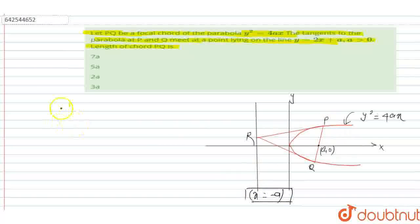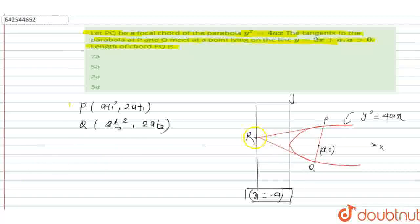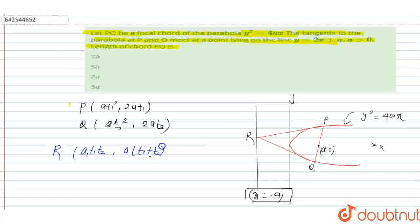Let's assume the coordinate of point P in parametric form is (at1², 2at1), and the coordinate of Q is (at2², 2at2). Since the tangent on point P and point Q meet at intersection point R, the coordinate of R can be written as (at1t2, a(t1+t2)).